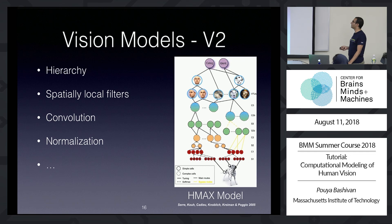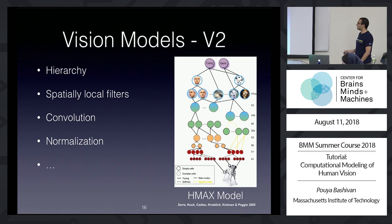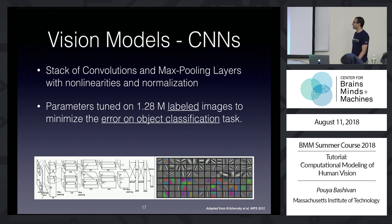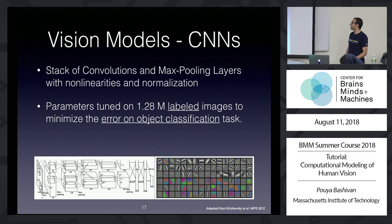We also have models of V2. One specific model is the Hmax model, which again is made out of convolution, non-linearity, and normalization. In this model, some parameters were fixed but some were trainable using a task, so it's not a completely fixed model. So far we've seen that for most of these areas — maybe all of them — we now have a convolutional model that does better than previous ones. Let's dig deeper into these models before going to other areas like V4 and IT.